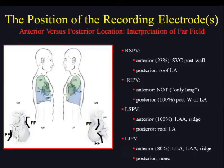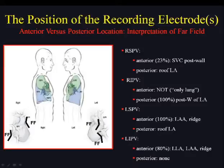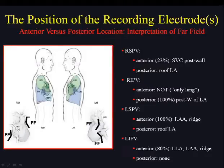You have to know the position of the PVAC catheter and which electrodes are facing anterior and posterior — because you need to interpret the far field correctly. The far field always arises at the shortest angle between the vein and the atrium. For the right pulmonary vein, far field appears on the anterior wall; for the inferior pulmonary vein, especially on the posterior wall. The shortest angles are observed on the anterior part of the left superior and left inferior PVAC positions.